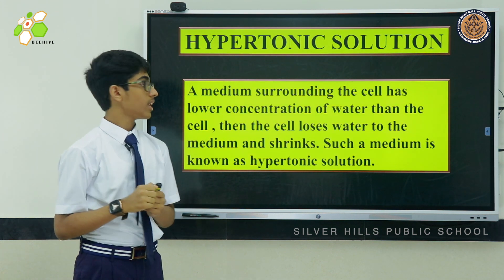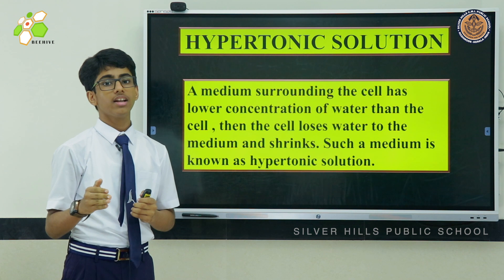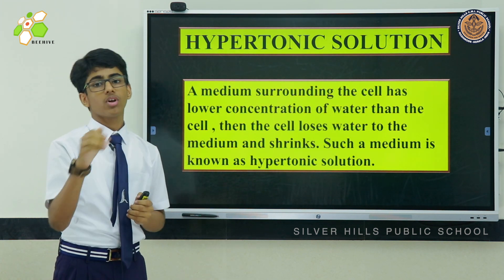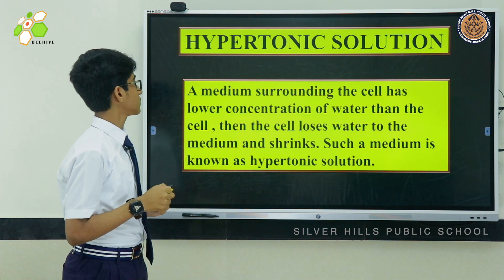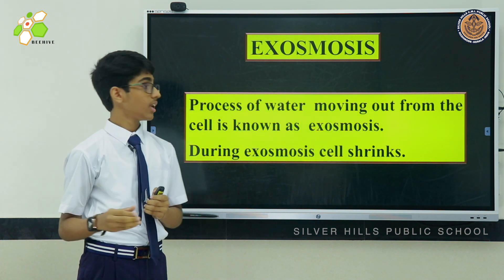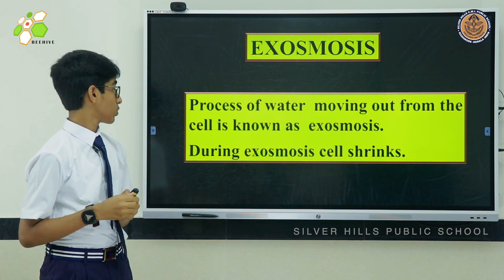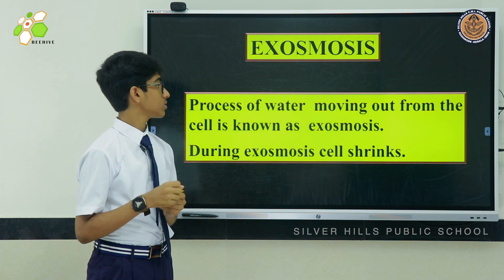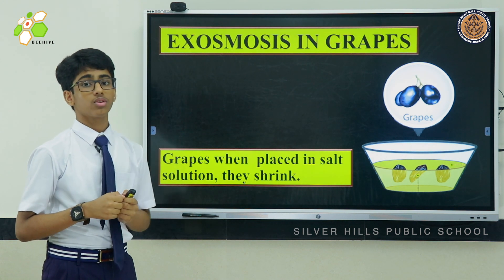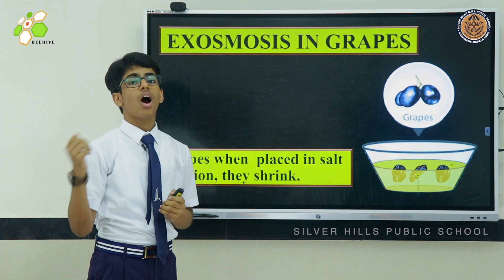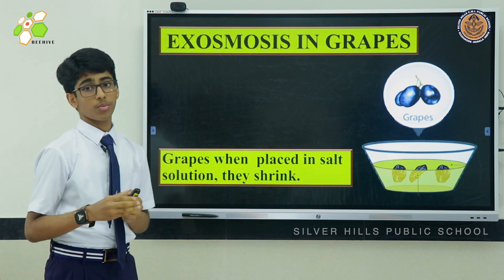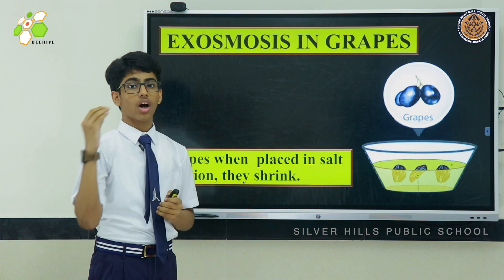In a hypertonic solution, the medium surrounding the cell has lower water concentration than the cell, so the cell loses water by osmosis. The process of water moving out from the cell is known as exosmosis. Here we can see the picture of grapes soaked in salt solution — after some time they shrink, because water inside the cell moves out to the medium.